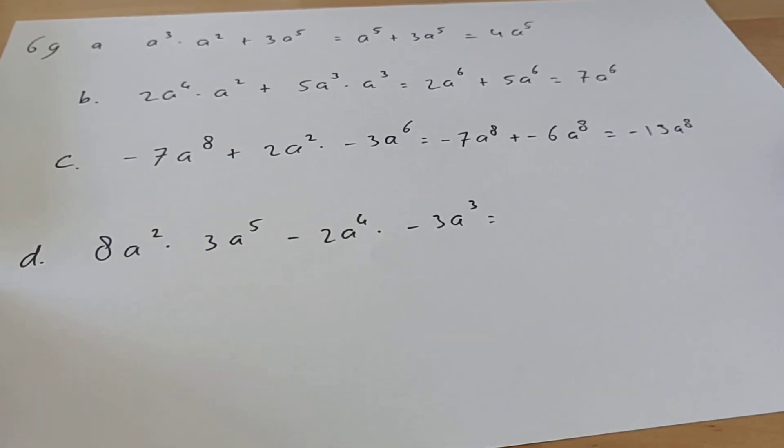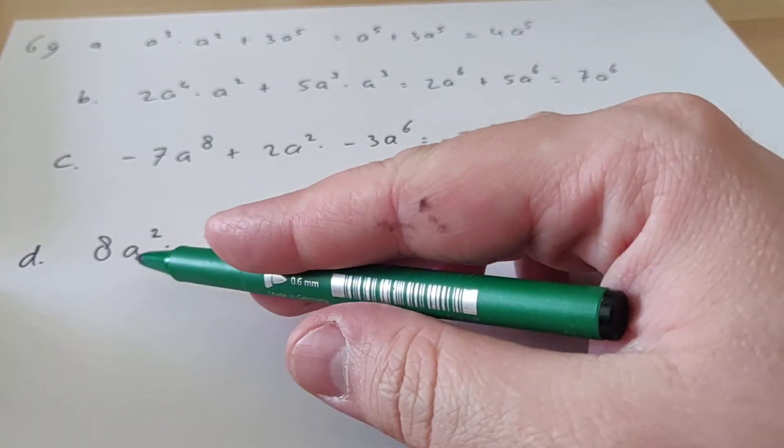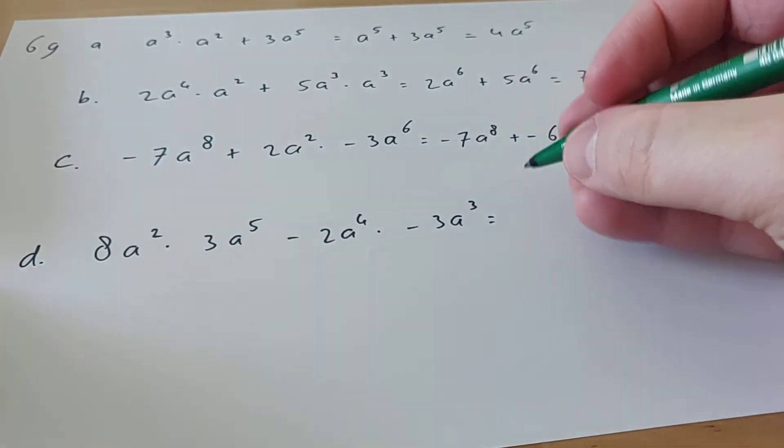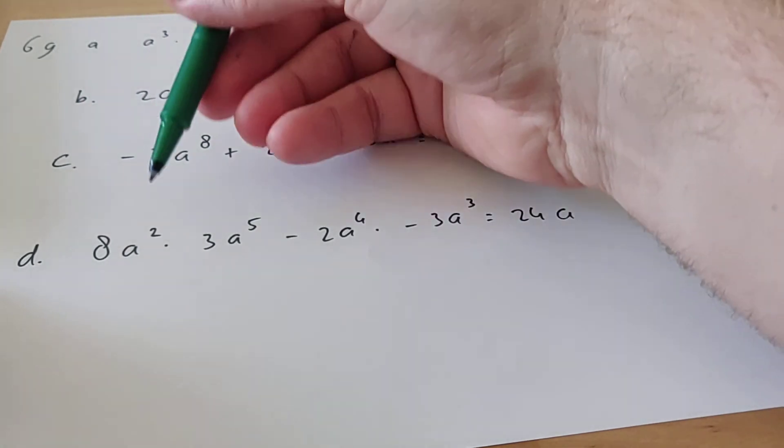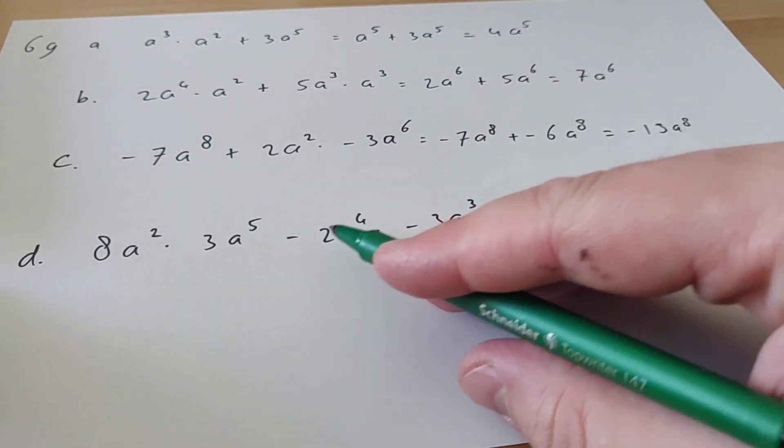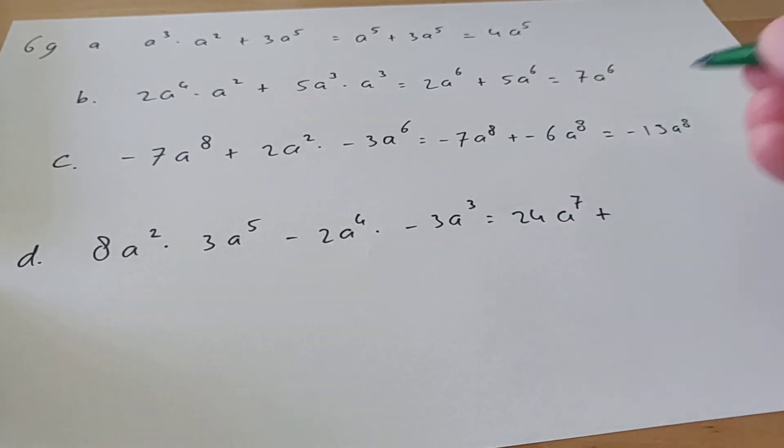Moving on to 69d, here you have this times and that times, we have to calculate that first. 8 times 3 is 24, and then a^7. Then we have minus times minus, so that will be positive.